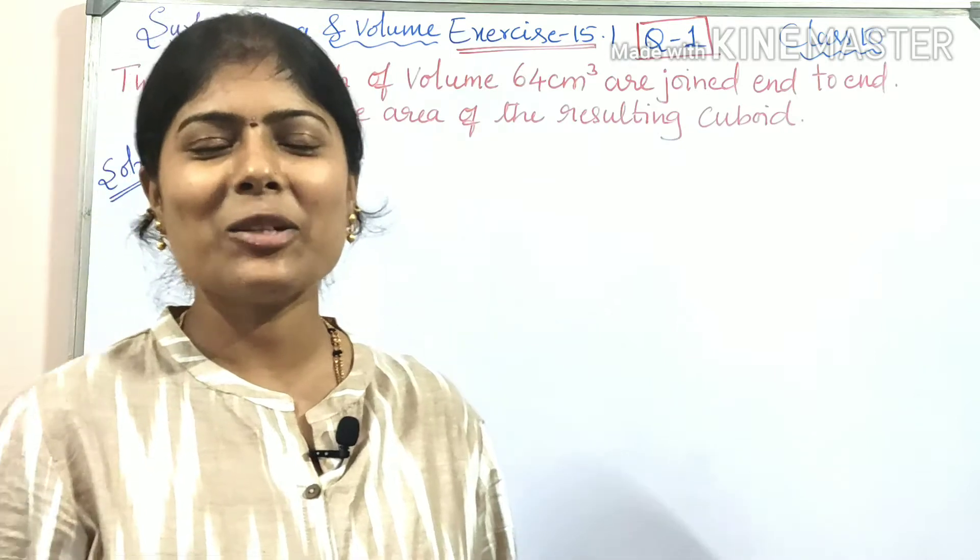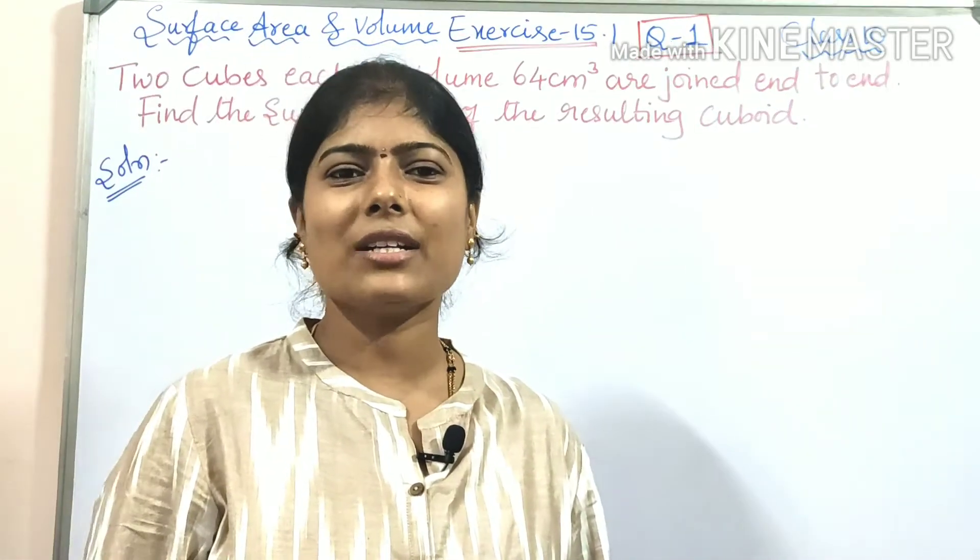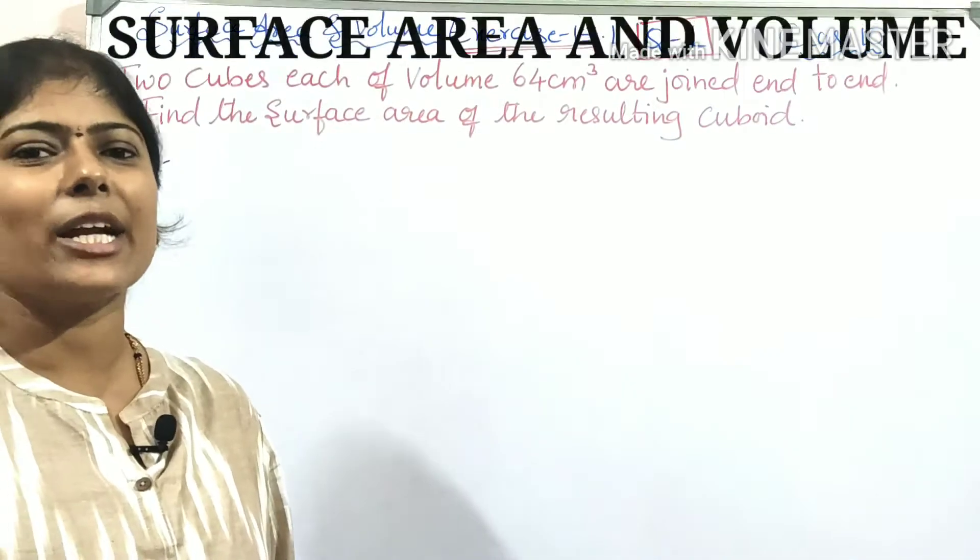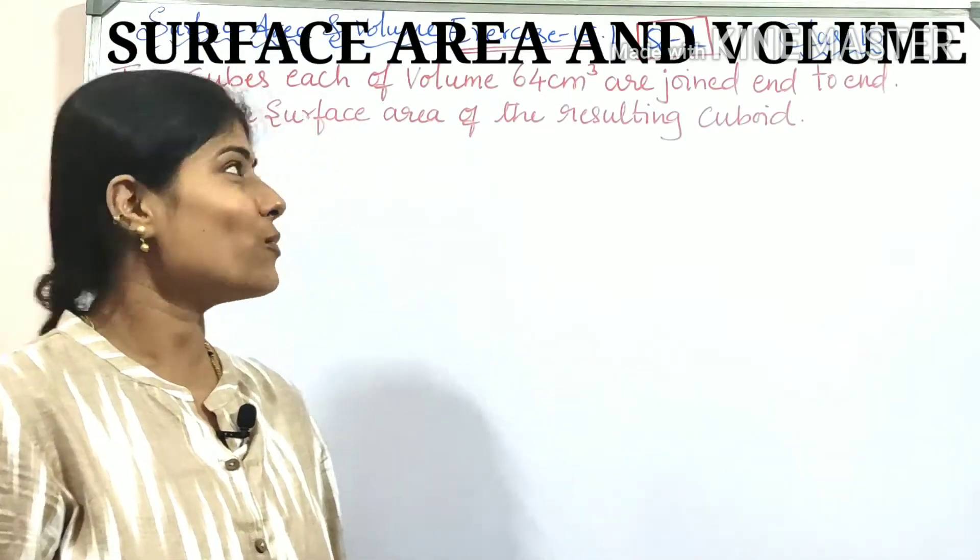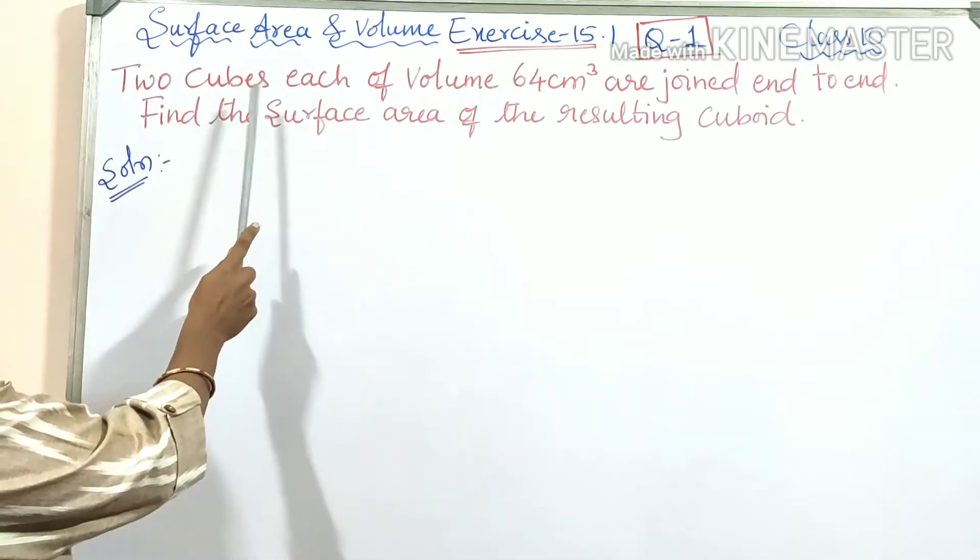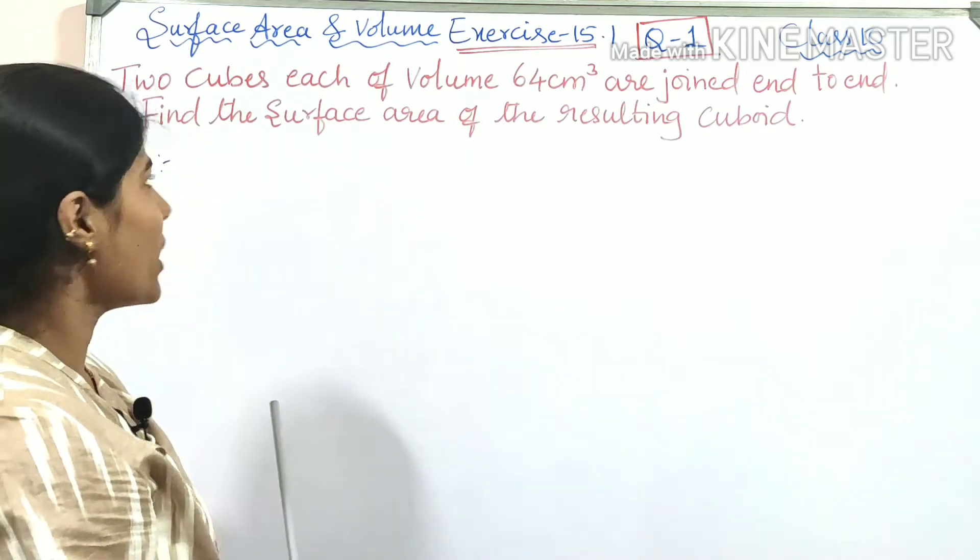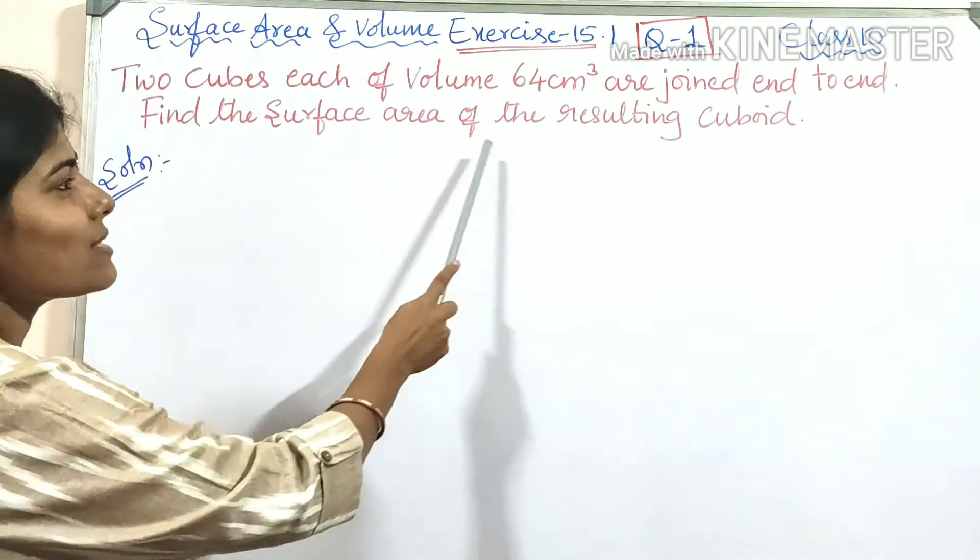Hi everyone, welcome to DVS Math. I am Deepa Prasad. Today we are starting a new concept: Surface Area and Volume, Exercise 15.1, Question Number 1. Two cubes each of volume 64 centimeter cube are joined end-to-end. Find the surface area of the resulting cuboid.